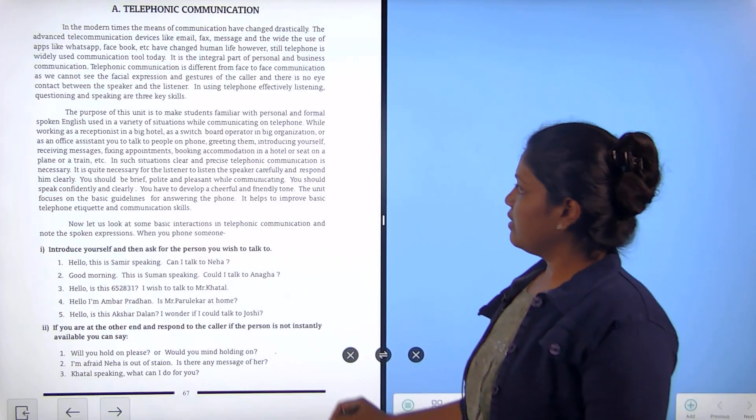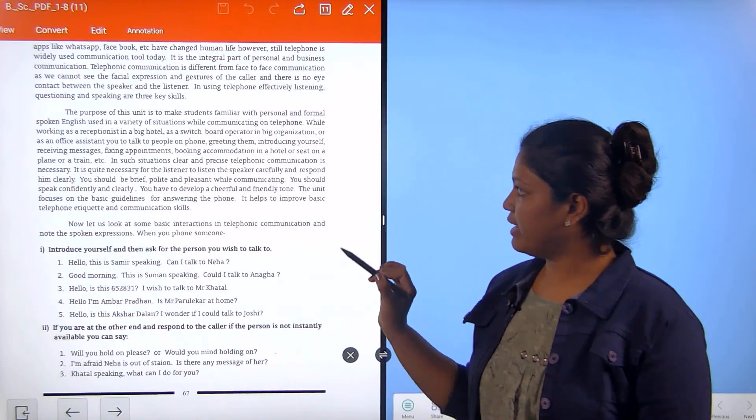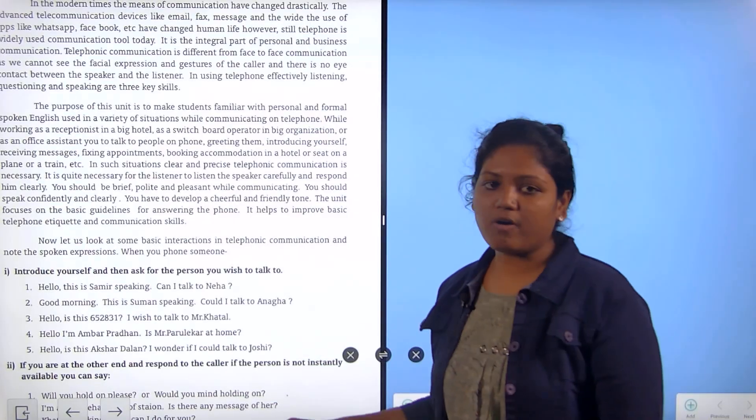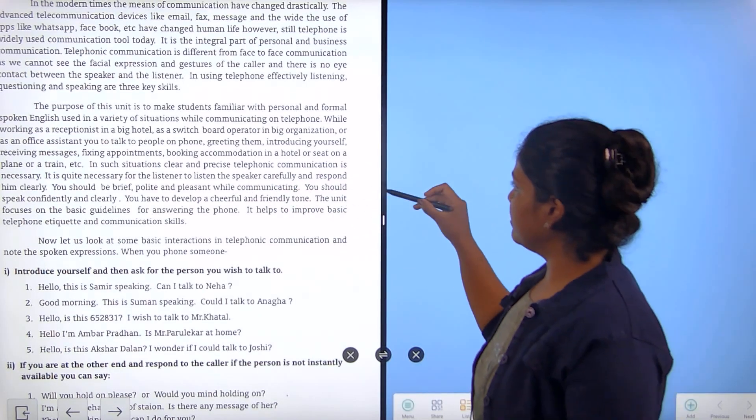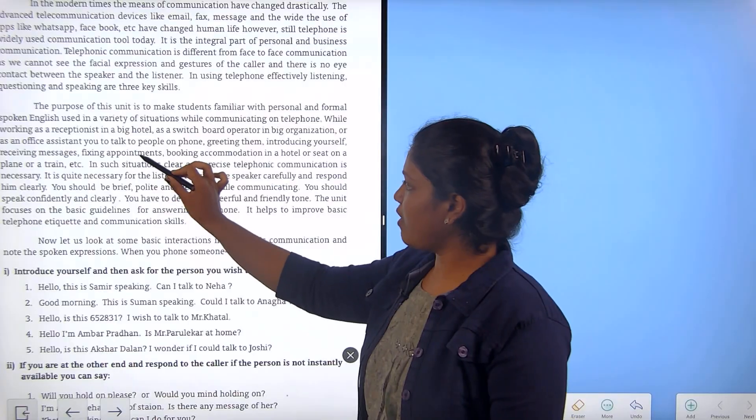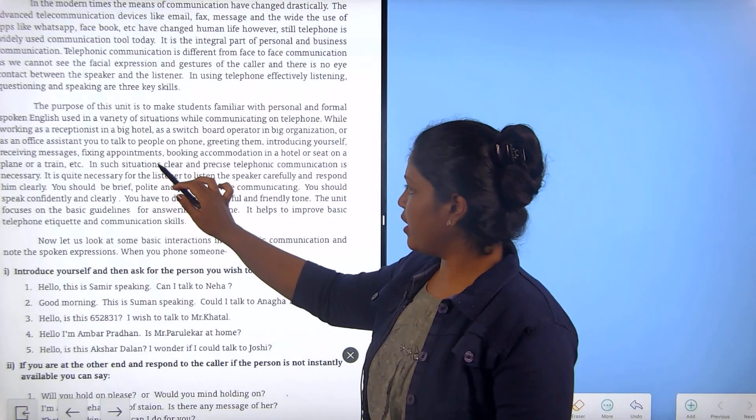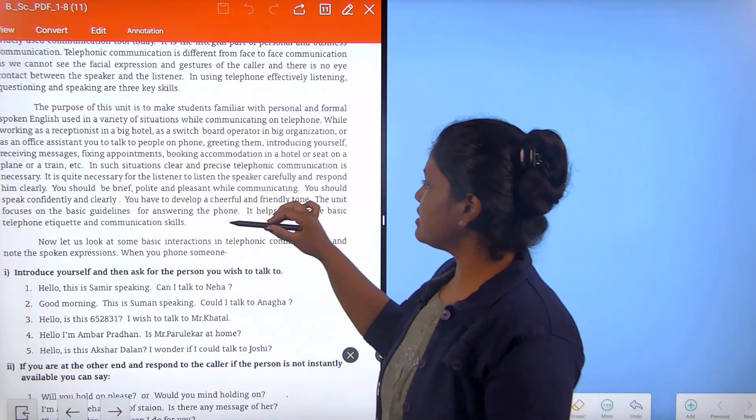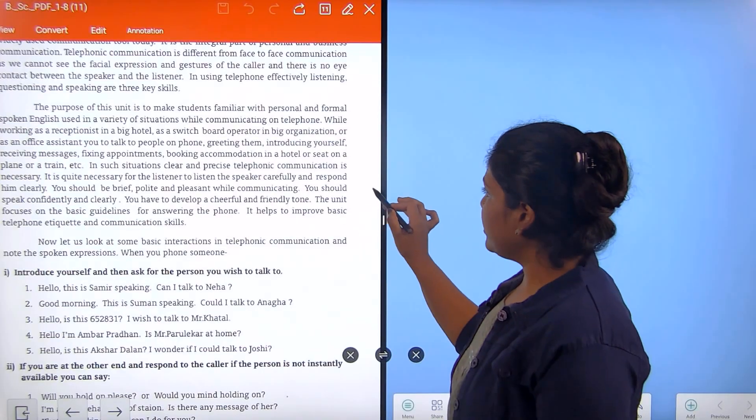The purpose of this unit is to make students familiar with the personal and formal spoken English used in a variety of situations while communicating on telephone. While working as a receptionist in a big hotel or as a board operator in an organization or an office assistant, you talk to people on phone, greeting them, introducing yourself, receiving, fixing appointments, booking accommodation in a hotel or a seat on a plane or a train. In such situations, clear and precise telephonic communication is necessary.